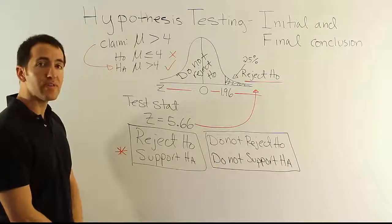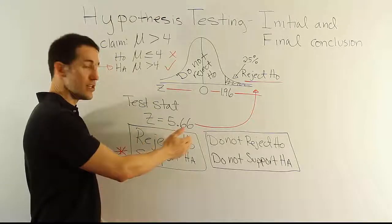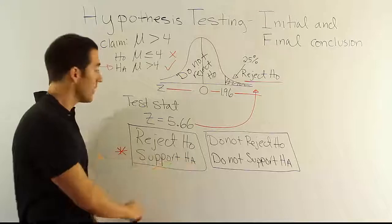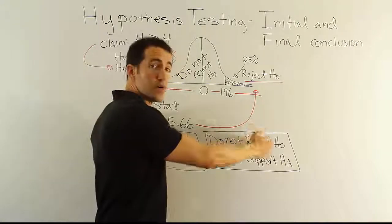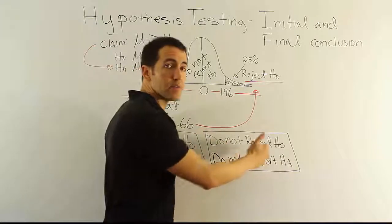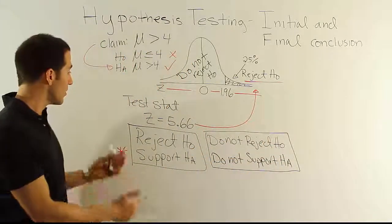So the only thing you can say then is four unique statements. You can either say the sample data allows you to reject the claim. The sample data allows you to support the claim. The sample data does not allow you to reject the claim. The sample data does not allow you to support the claim. And that's it. That's all you can say.